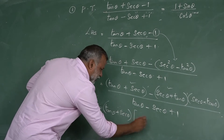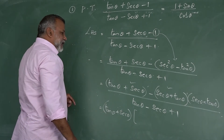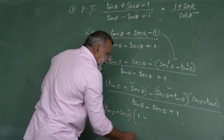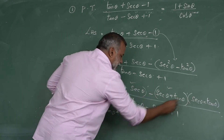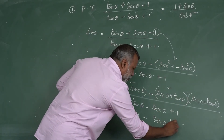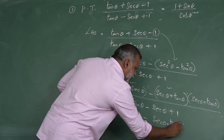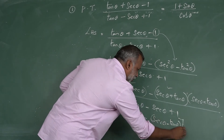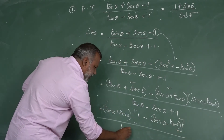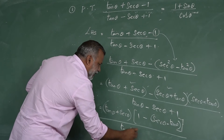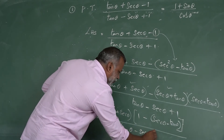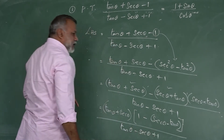After taking out the common factor tan θ + sec θ, the remaining numerator factor is 1 minus (sec θ - tan θ), and the denominator stays as tan θ - sec θ + 1.